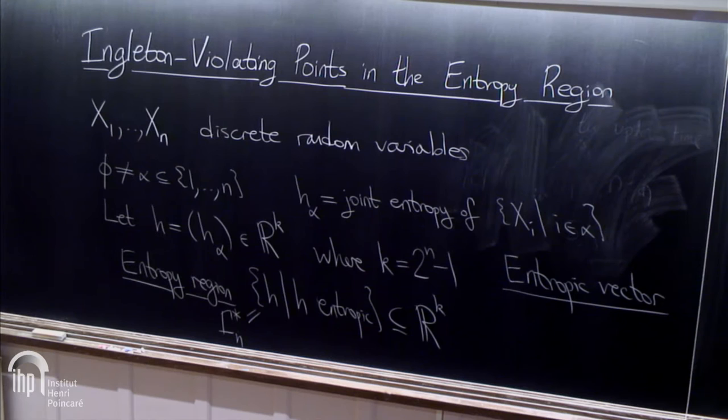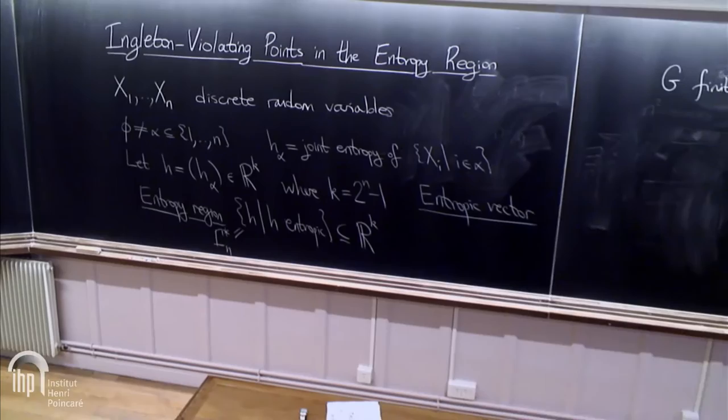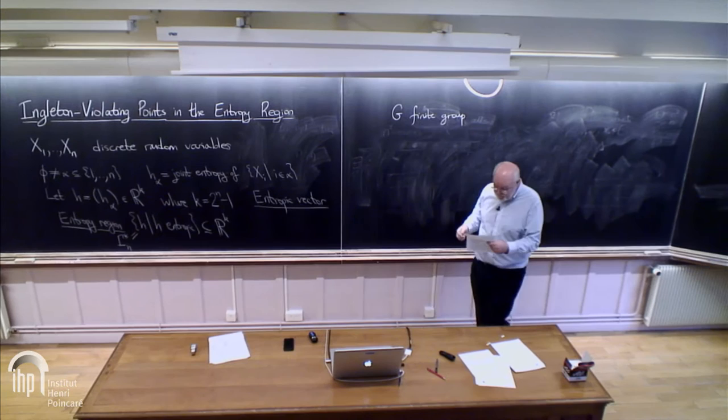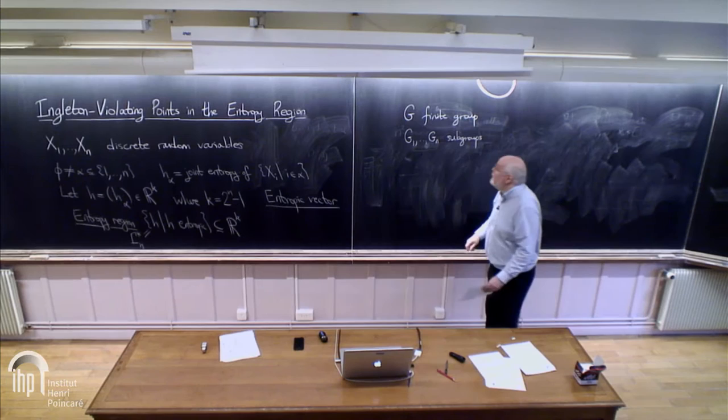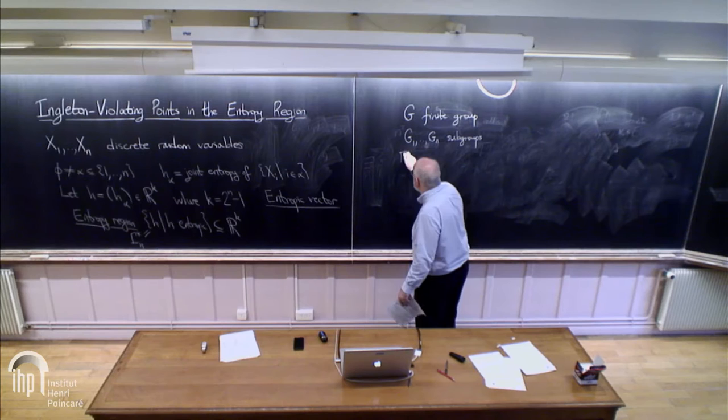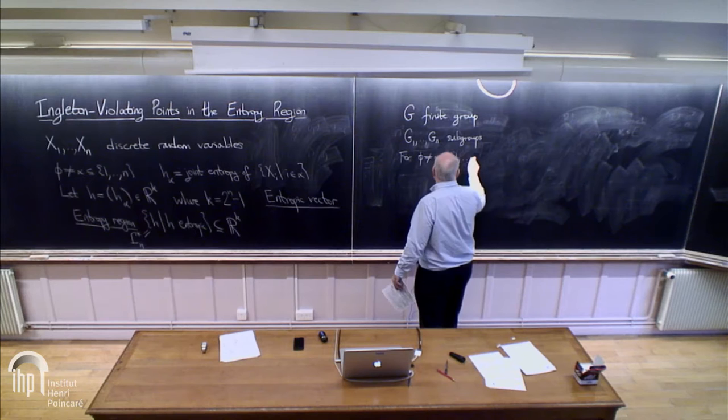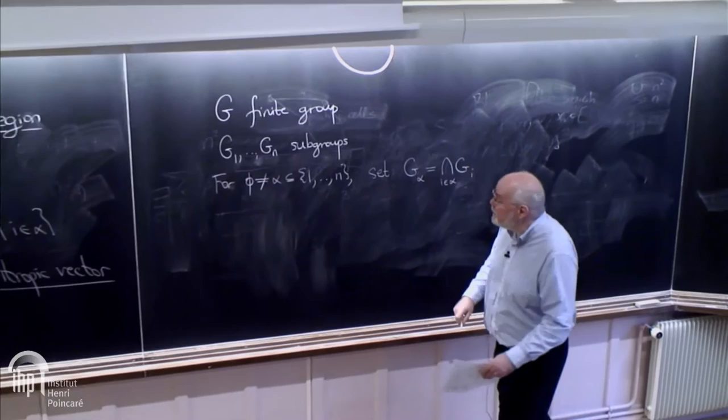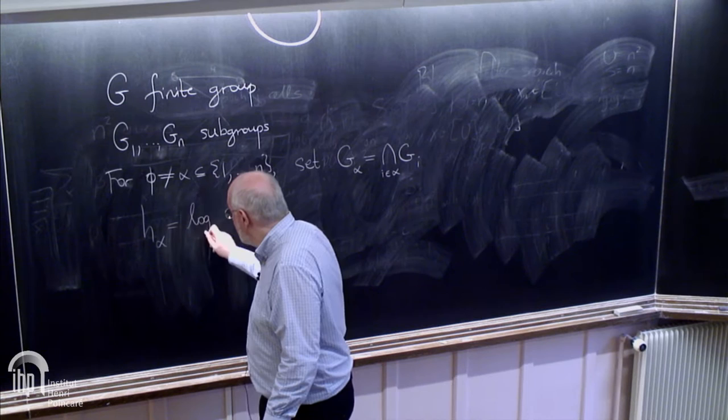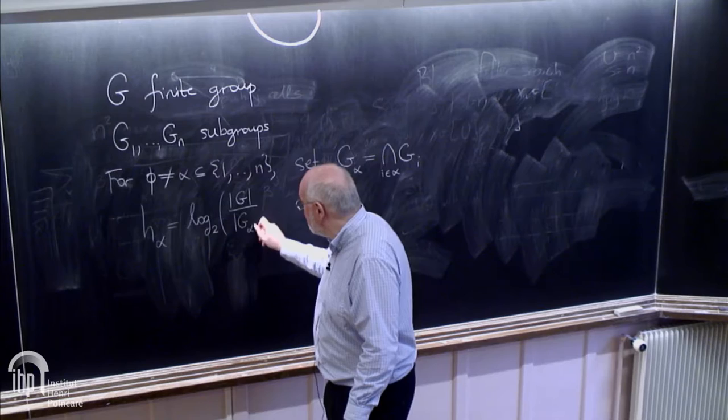The group theoretic approach is as follows. Suppose you have a finite group—a set with a composition that satisfies certain hypotheses: associativity, there's an identity, and there are inverses. All permutations of some finite set SN would be such a thing. Suppose we have subgroups—subsets of G that form groups under that operation.